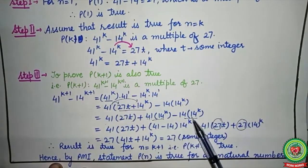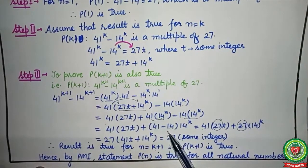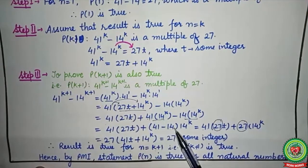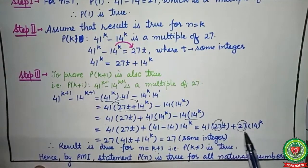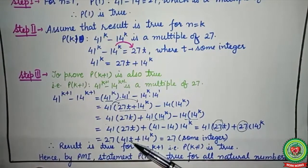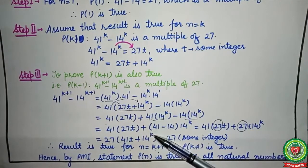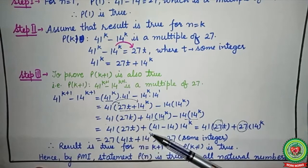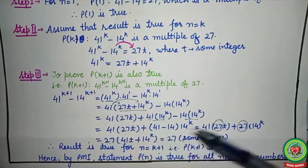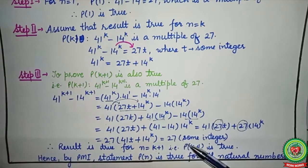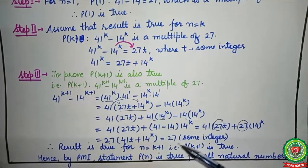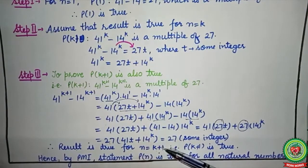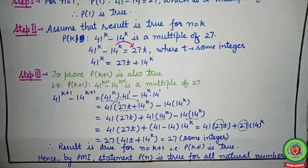Since both terms have 14^k, we subtract the coefficients: 41 − 14 = 27, giving 41·27t + 27·14^k. Taking 27 as common from both terms: 27(41t + 14^k). Whatever the values of t and k, the expression inside the bracket is always an integer, so we have 27 × (some integer). Therefore the result is true for n = k+1, and by the Principle of Mathematical Induction, P(n) is true for all natural numbers.